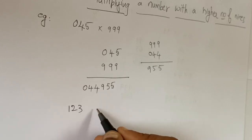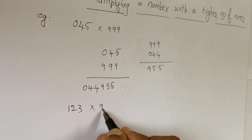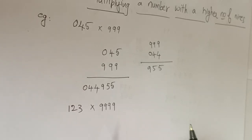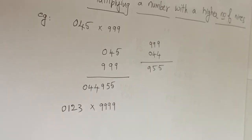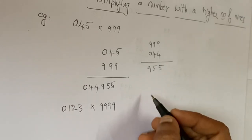To make it a four-digit number, we have to put zero here. And we have to reduce one number, so that is 0122.